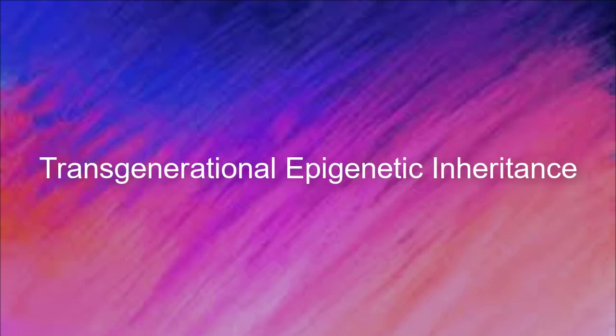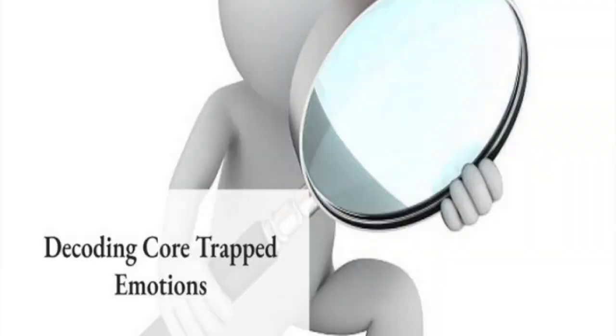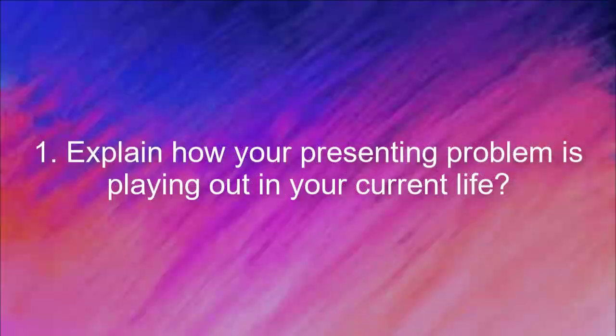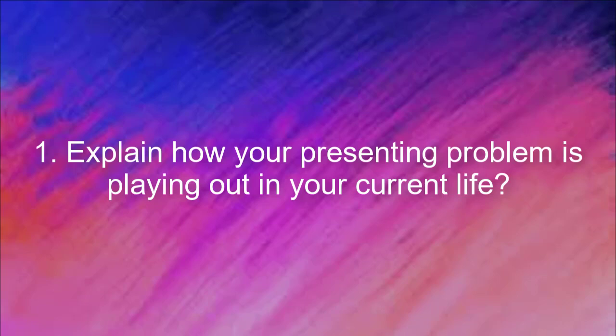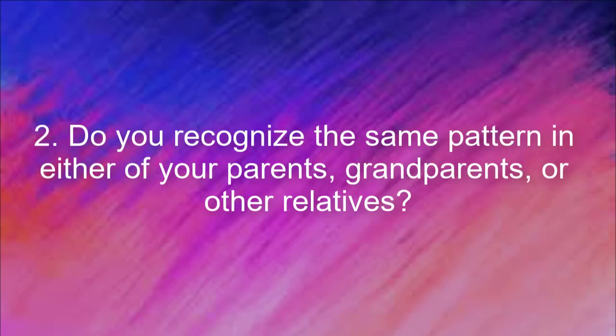Now let's move forward to the transgenerational epigenetic inheritance. This is going to help us decode the core trapped emotion. Explain how your presenting problem is playing out in your current life. For instance, if it's related to money or to an ideal weight, how has that had an impact on your life? Has it been limiting you in any way? List how you have felt restricted or impacted by this. And do you recognize the same pattern in either of your parents, grandparents, or other relatives?